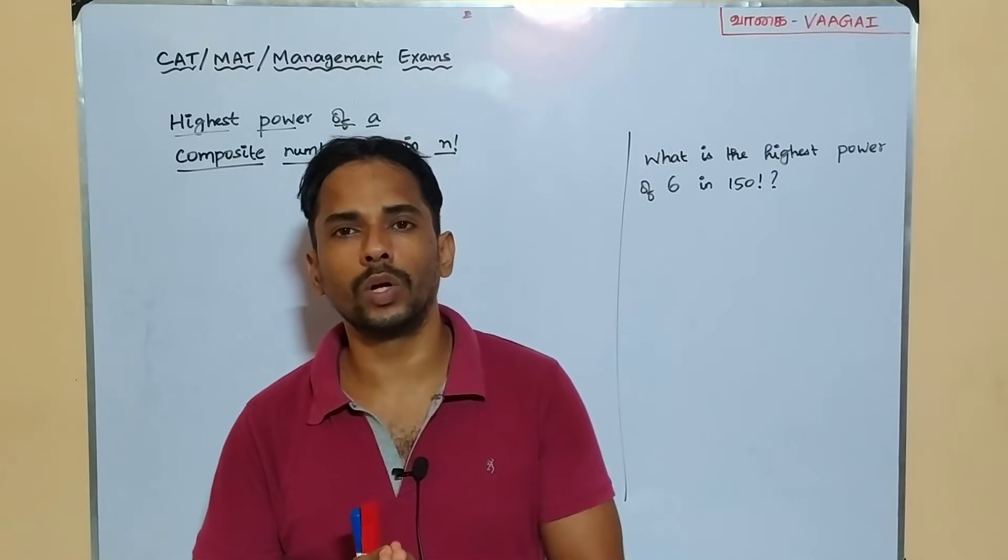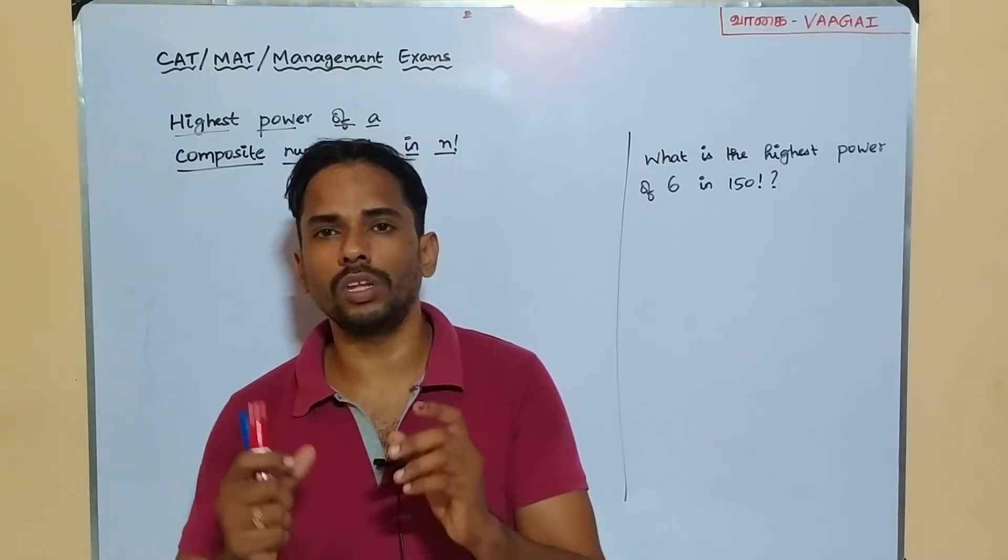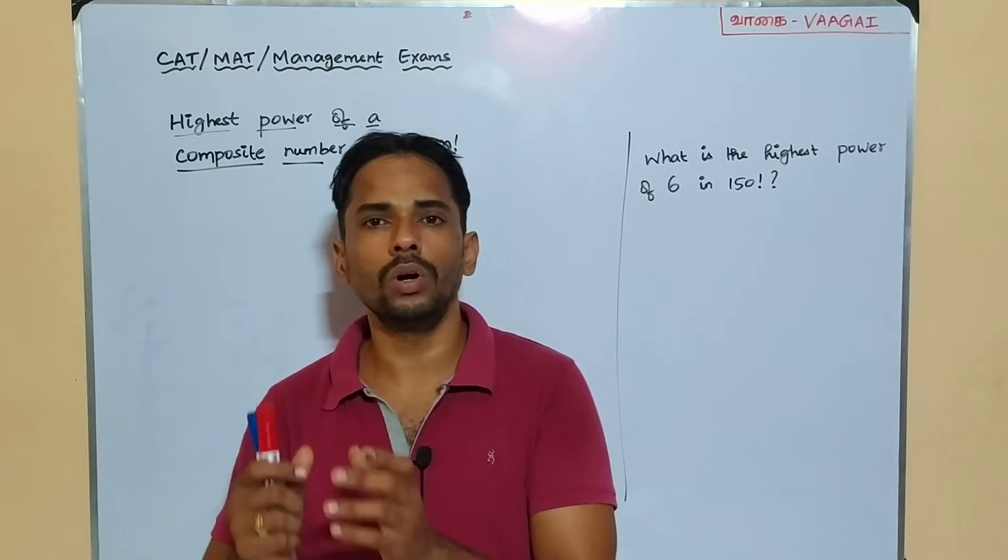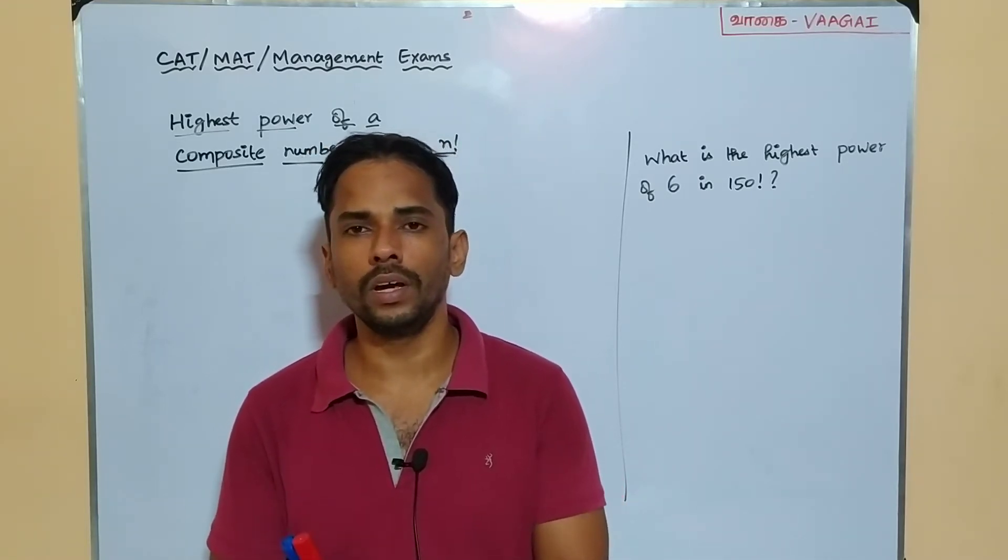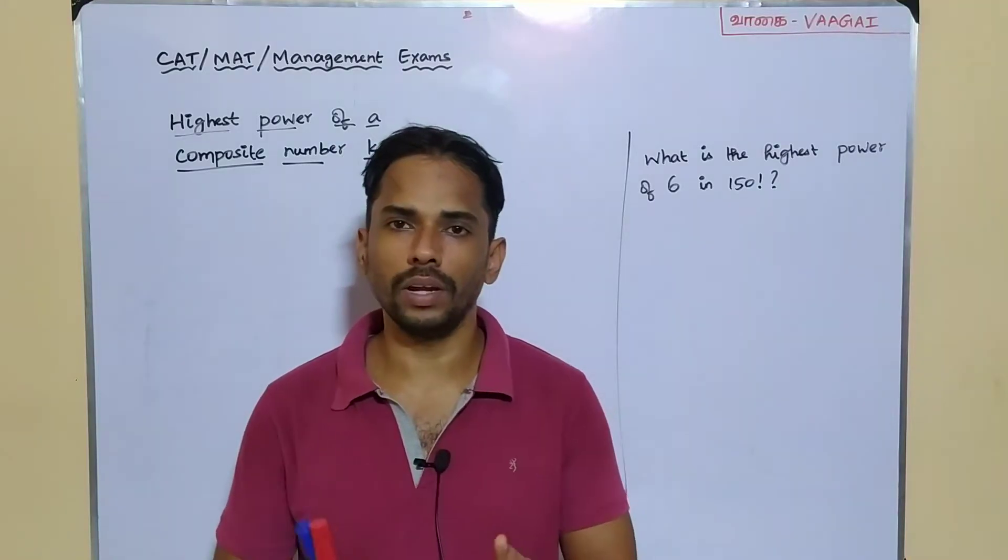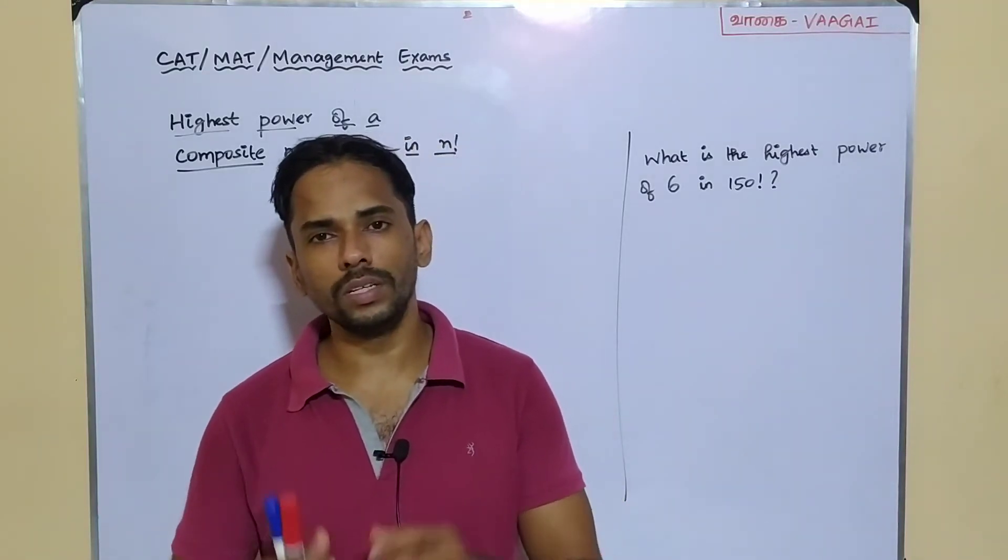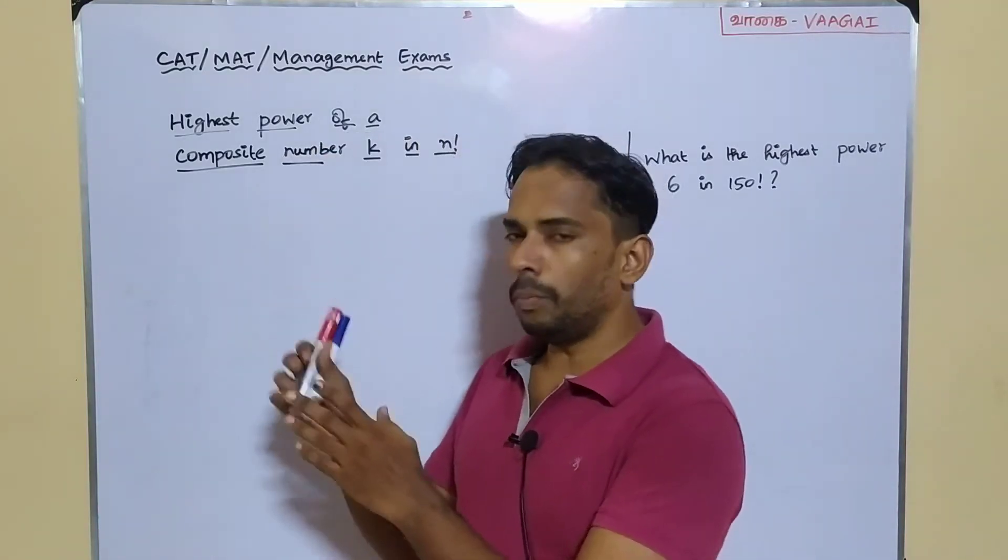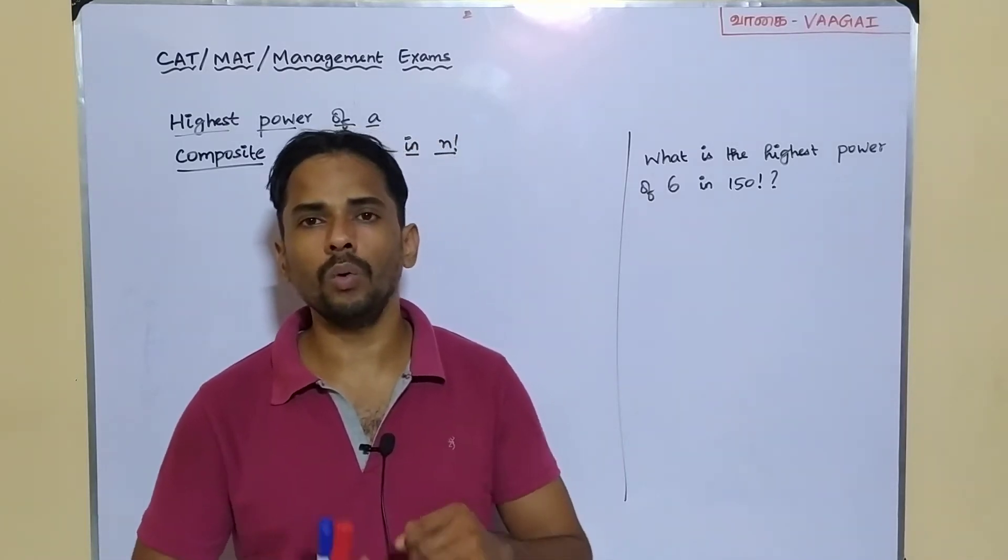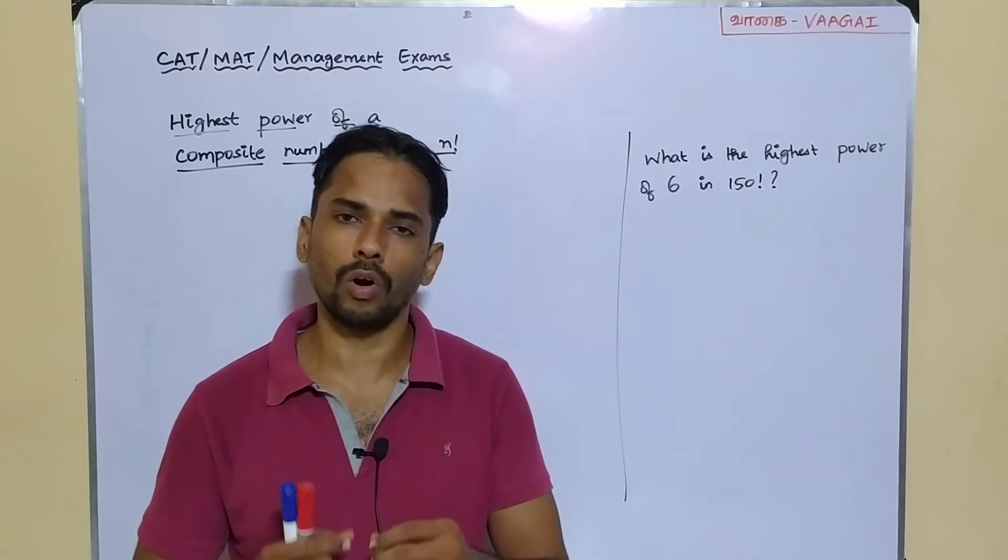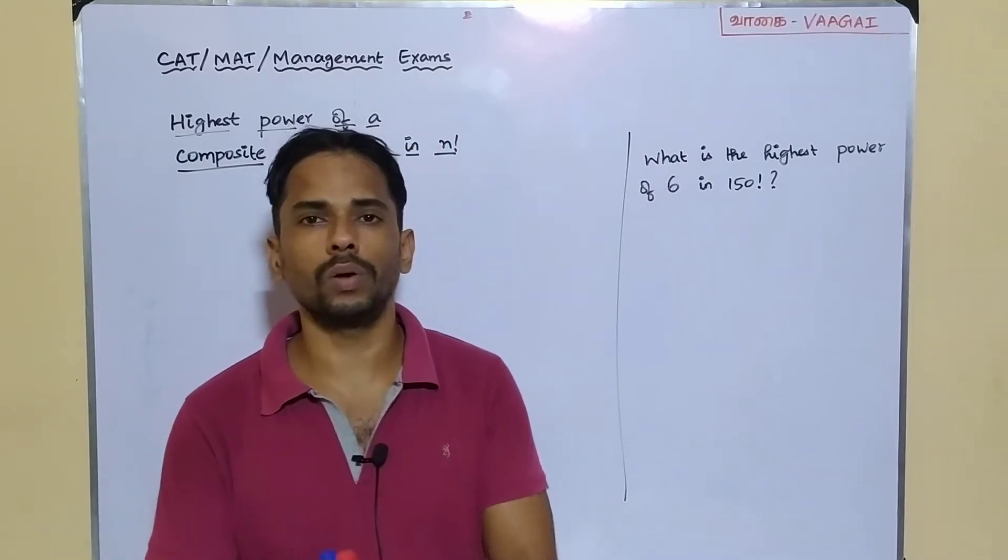The method is going to totally vary. In our previous session, we saw the very basic concept, some examples, and a quick shortcut on how to find a prime number's highest power in a given n factorial. But this session, if we are given a composite number, how can we do the same? That is, given an n factorial, how can I find the highest power of a composite number there?